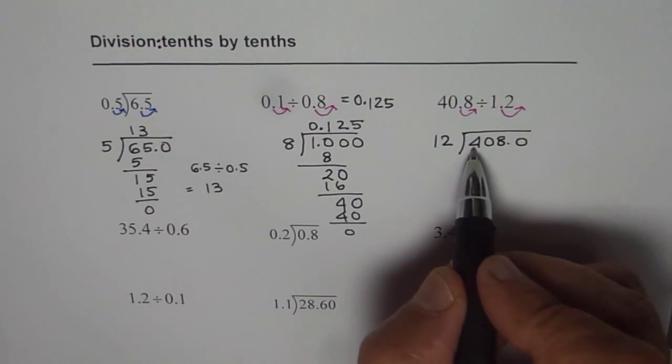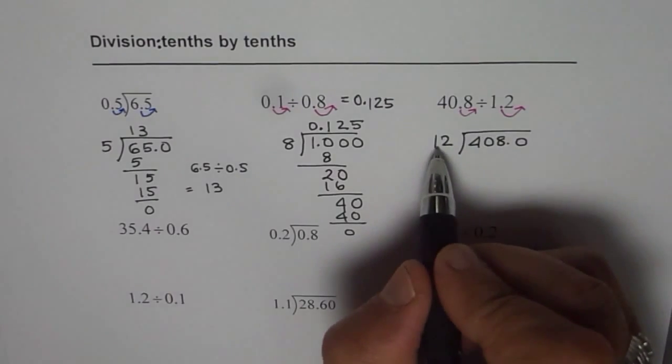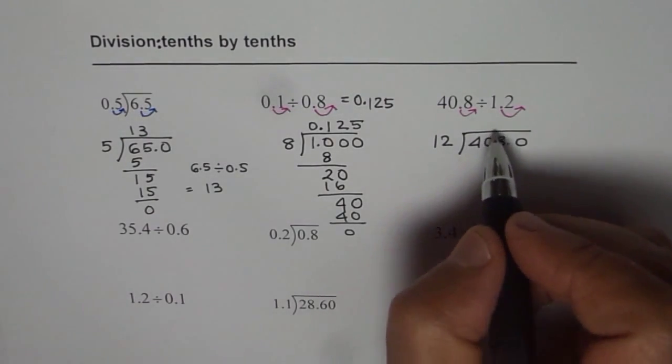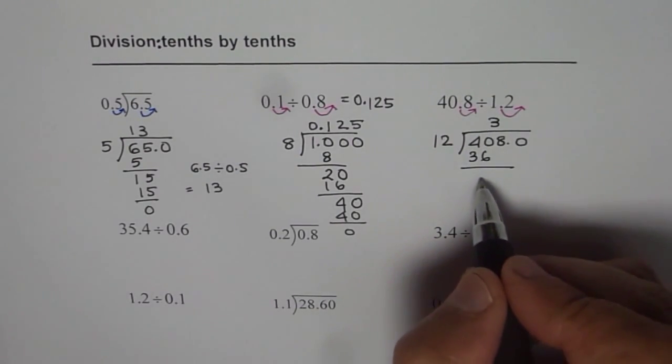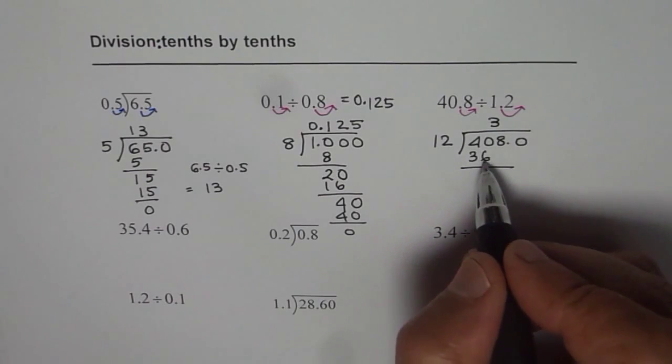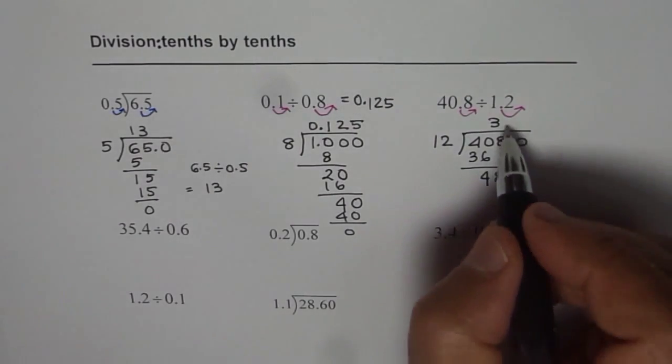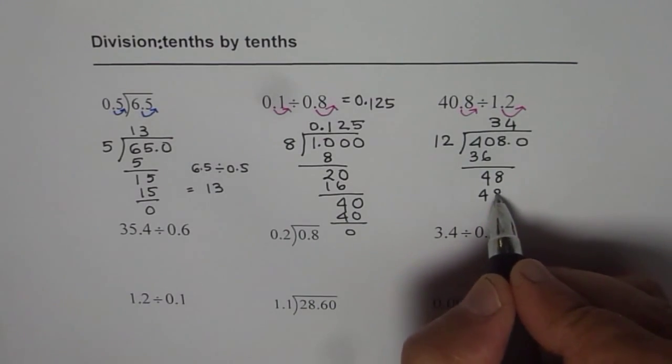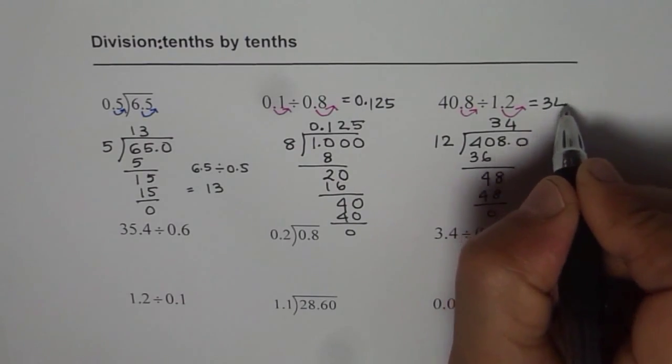If you divide 40 by 12, by what you can multiply? 3 times 4. 3 times 1 is 3. 3 times 2 is 6. 36. 3 times 12 is 36. Take away 36 from 40. So 10 take away 6 is 4. 3 take away 3 is 0. Let's bring down 8. Now 12 goes 4 times in 48. 12 times 4 is 48. So we get 0 remainder. So the answer is 34 for us.